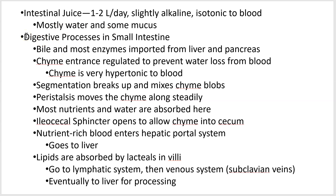Intestinal juice doesn't do a lot of enzymatic digestive jobs specifically — its main job isn't enzymatic digestion. What does occur is that you get bile and enzymes from the liver and pancreas. The material that comes in is called chyme, and it enters in little squirts of about three milliliters — very hypertonic.